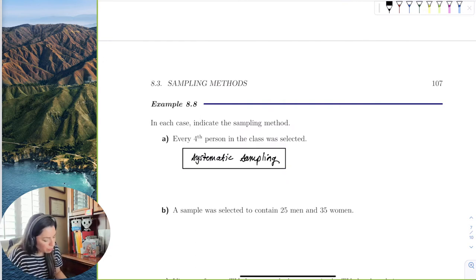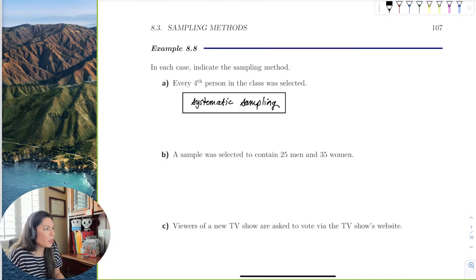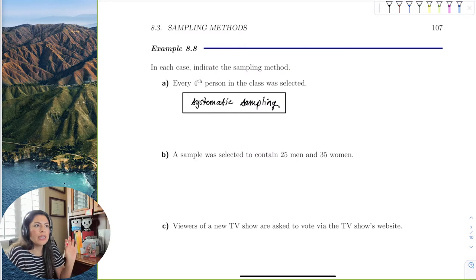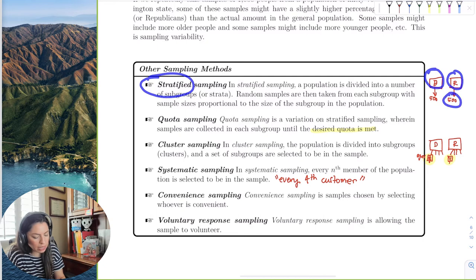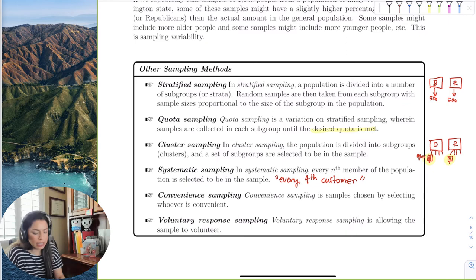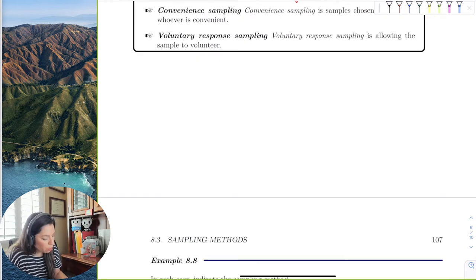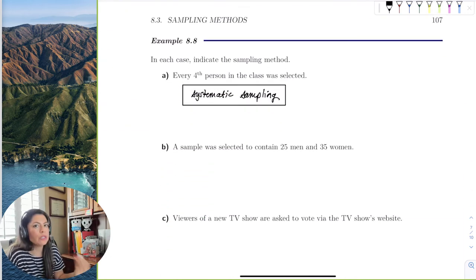All right, a sample was selected to contain 25 men and 35 women. So notice that these values are not equal. It's not 25 men, 25 women. It's just, I need a sample of 60. And 25 and 35, can I just meet? So this is similar to the stratified sampling, right? Where you get them into groups and then select from those groups. But quota was when they weren't equal and you just did it till your quota was met. So this one would be quota sampling. If they were equal, we would assume the stratified. Okay.